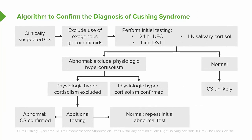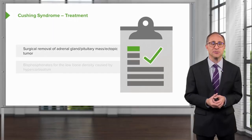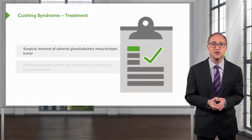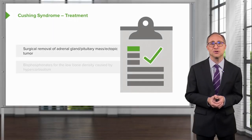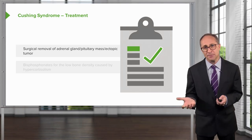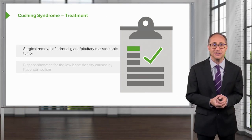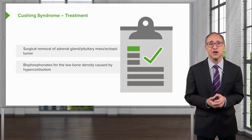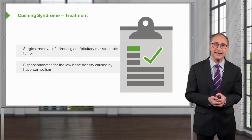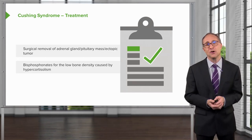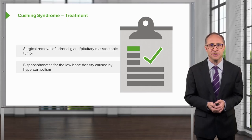If, however, imaging is normal, repeating the initial tests to confirm that they were indeed positive is probably the next step. If these are normal, then Cushing syndrome is unlikely. The treatment of Cushing syndrome consists of the surgical removal of the adrenal gland, the pituitary mass, or the ectopic tumor that is producing ACTH. Bisphosphonates for low bone density are a good idea, because long-term cortisol would have invariably led to osteoporosis.